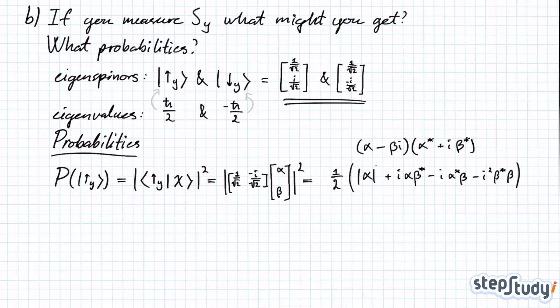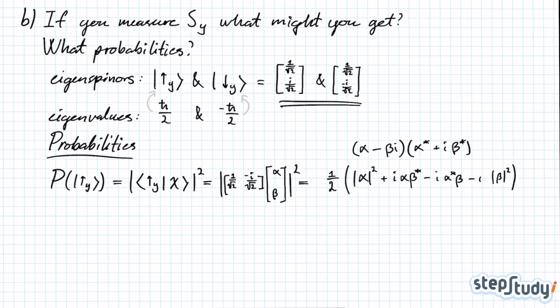We know from the fact that quantum states in general have to be normalized that the absolute square of alpha plus the absolute square of beta should give us 1, because that's the probability of finding any spin state. That should be 100%. So you can do that and just cross out alpha squared plus beta squared and make that into a 1 instead.